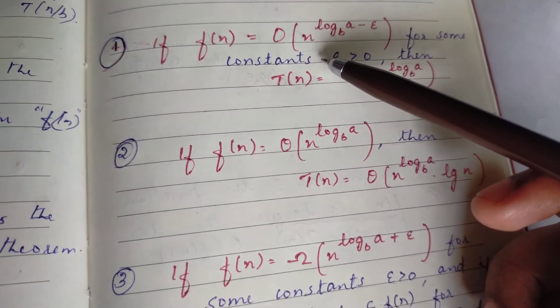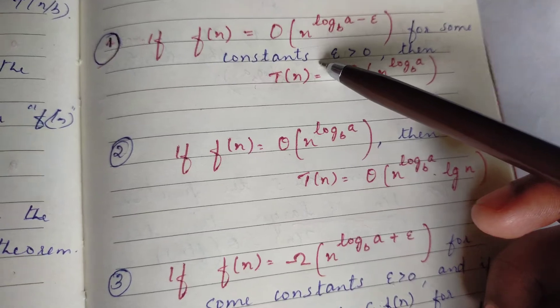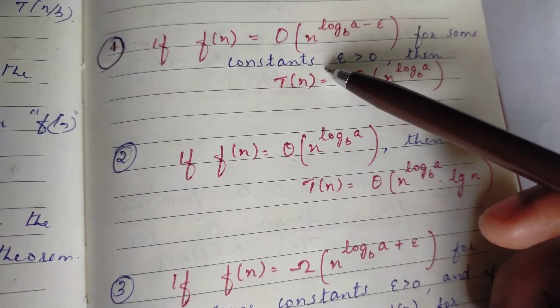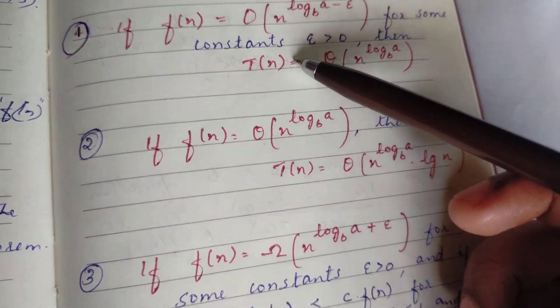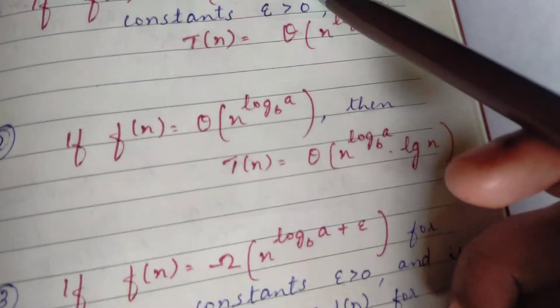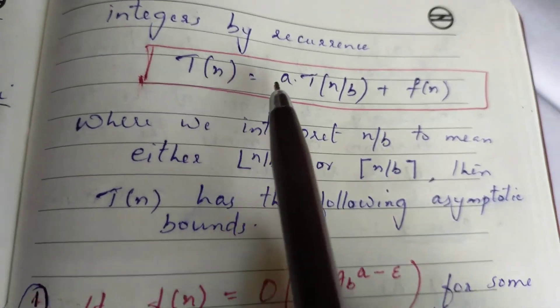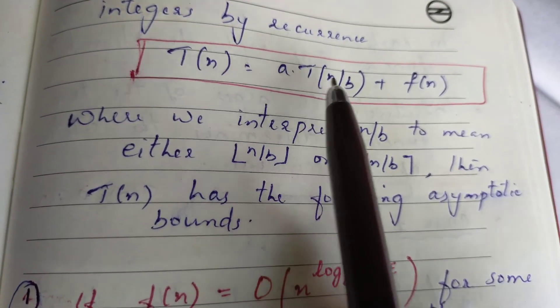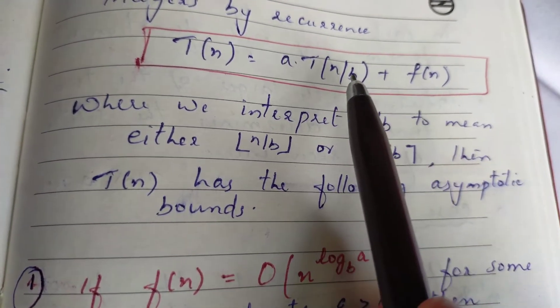So a should be greater than or equal to 1 and b should be greater than 1. f(n) is a function and T(n) is defined by non-negative integers of the recurrence T(n) = a * T(n/b) + f(n).